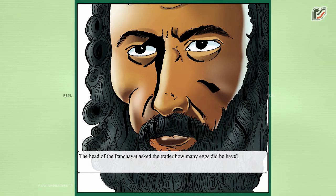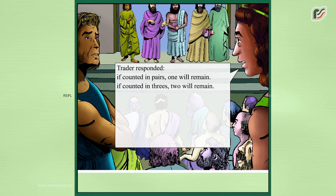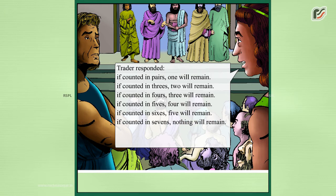The head of the panchayat asked the trader how many eggs he had. The trader responded: 'If counted in pairs, one will remain. If counted in threes, two will remain. If counted in fours, three will remain. If counted in sixes, five will remain. If counted in sevens, nothing will remain. And my basket cannot accommodate more than 150 eggs.'